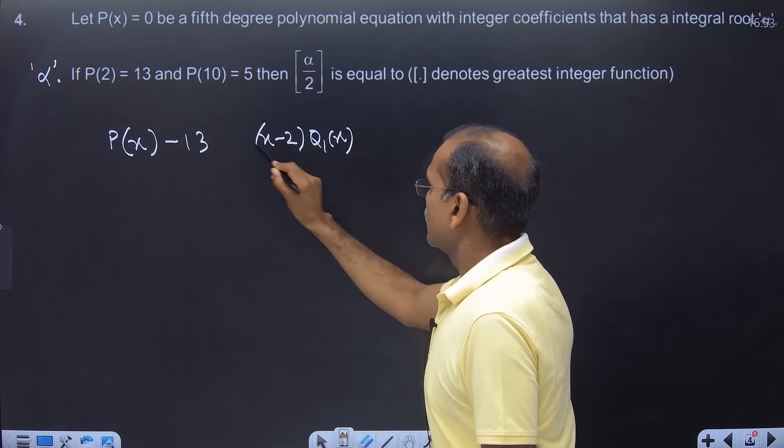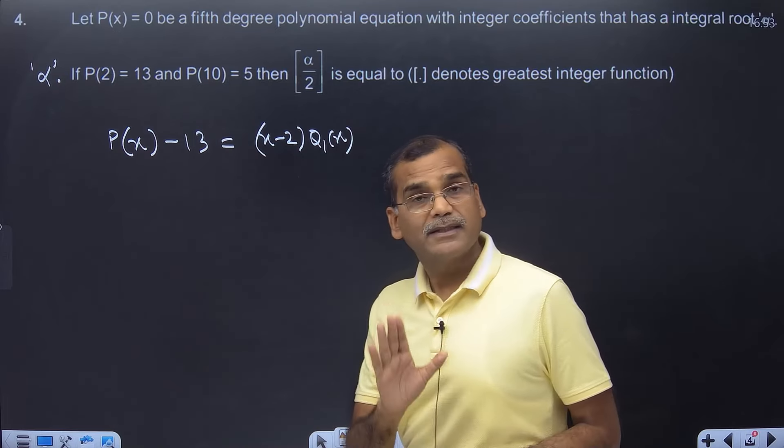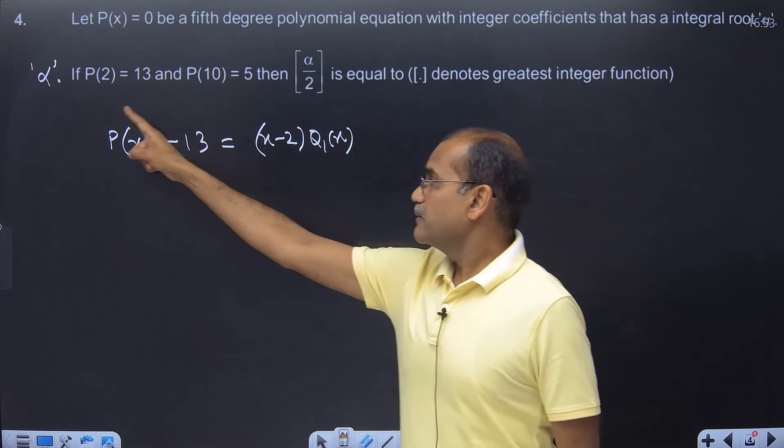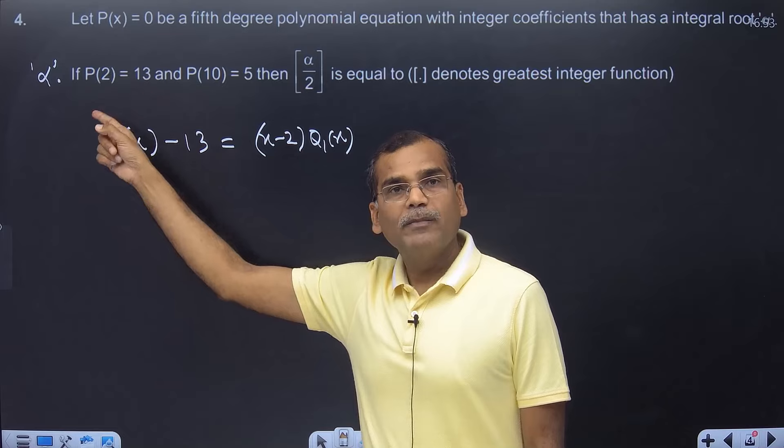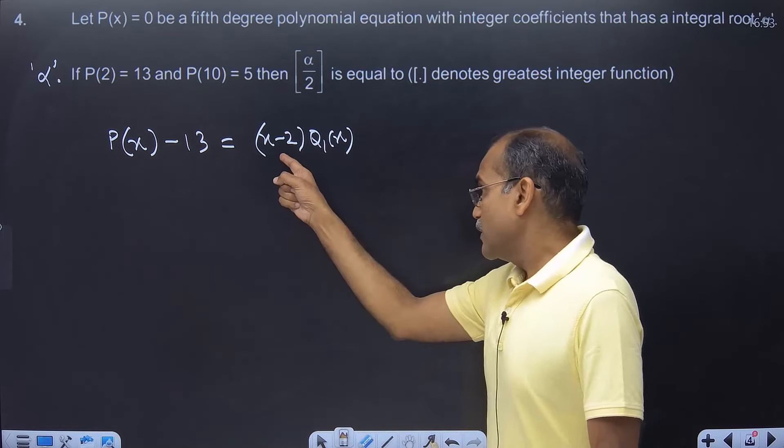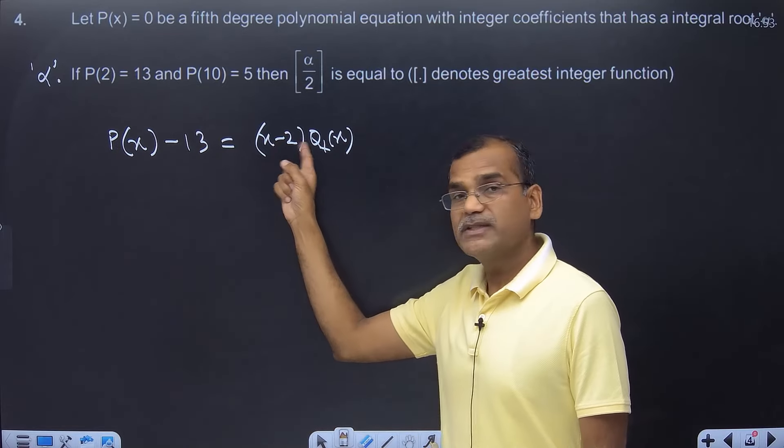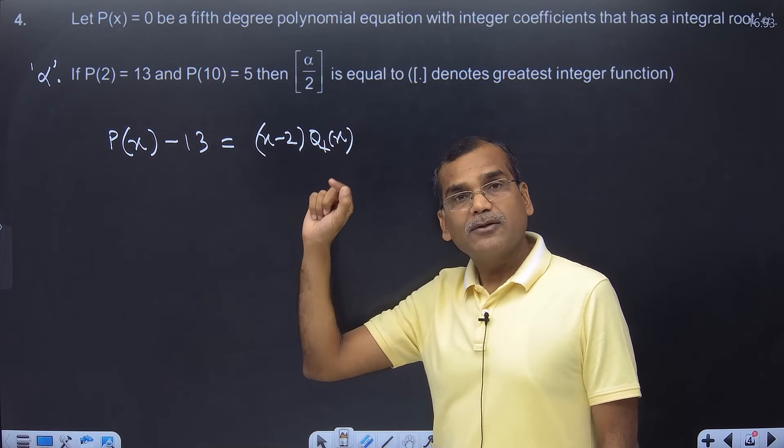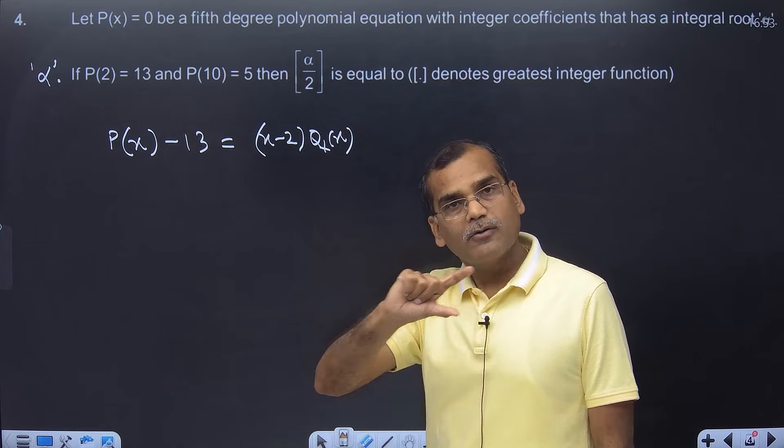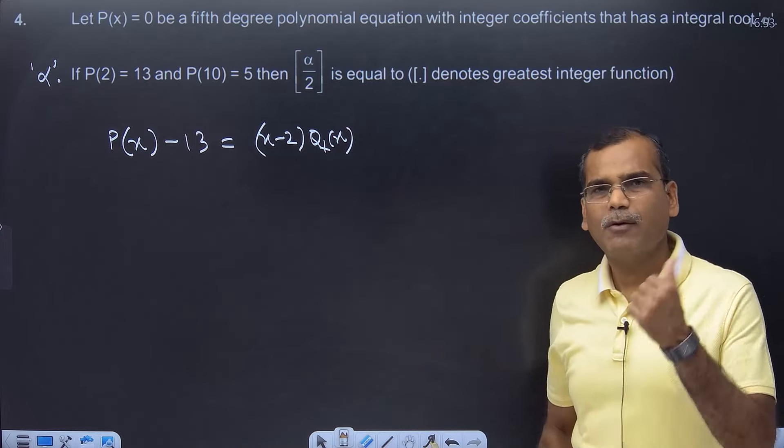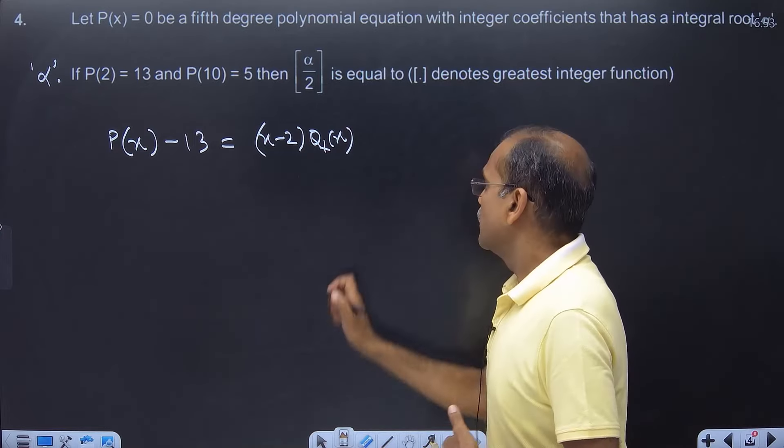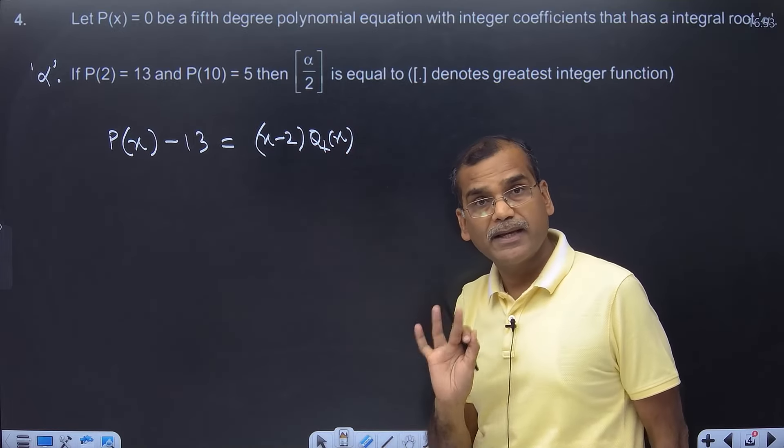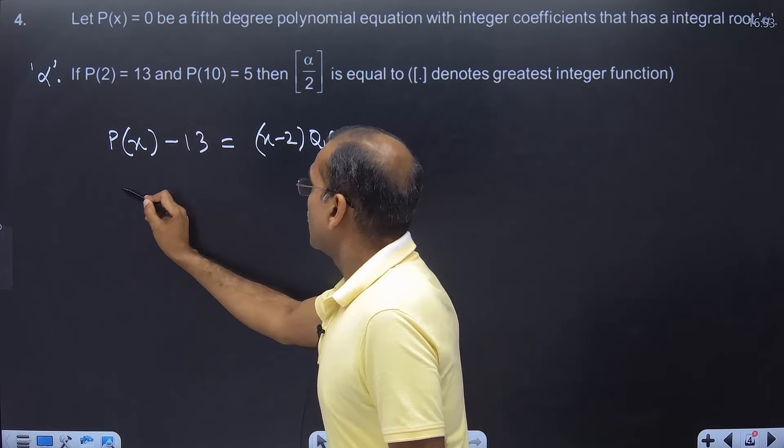So it equals (x-2) times Q1(x). You will understand that Q1(x) is also a polynomial. Now apply some logic - on the left side, the polynomial has all integer coefficients. This x minus 2 also has integer coefficients. So don't you believe that Q1 will also have all coefficients as integers? By common sense, if you multiply this out, all of Q1's coefficients must be integers.